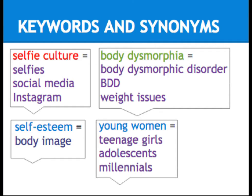Another thing to keep in mind are synonyms, which are terms that are similar or interchangeable with our keywords. For the term selfie culture, I might have problems finding a lot of information, so it would be wise to broaden my search to use the term selfies, or broader still social media, or maybe something more specific such as Instagram. For the term body dysmorphia, I learned in my research that the more technical medical term is body dysmorphic disorder, or BDD, or it could be commonly referred to as weight issues.